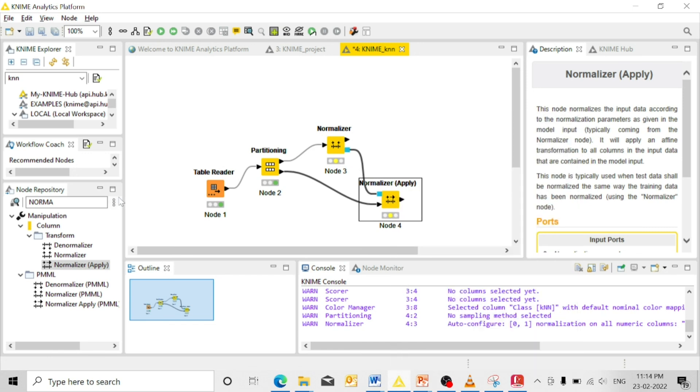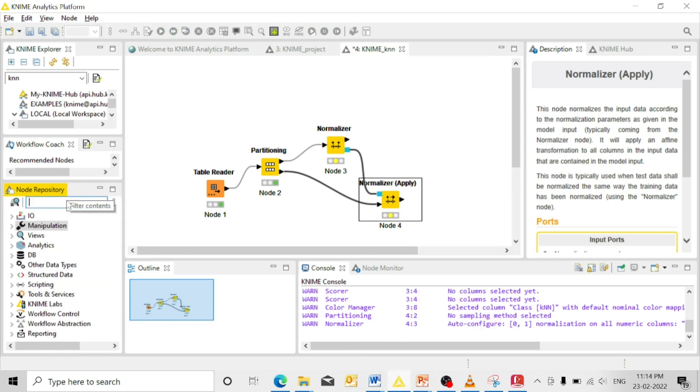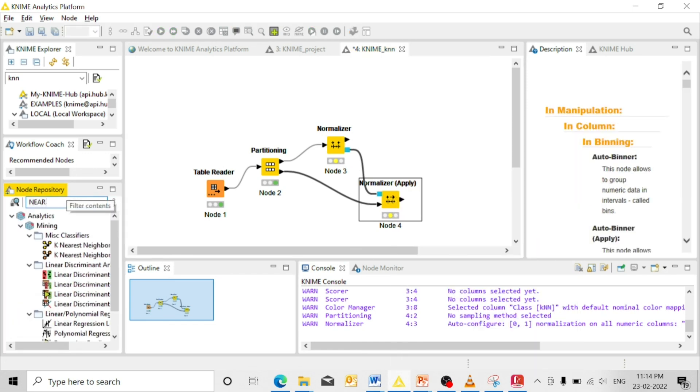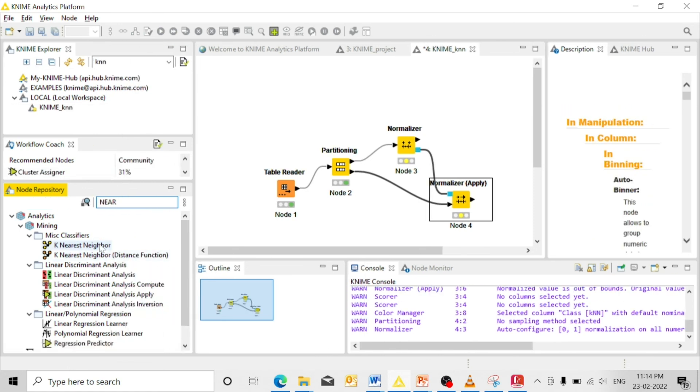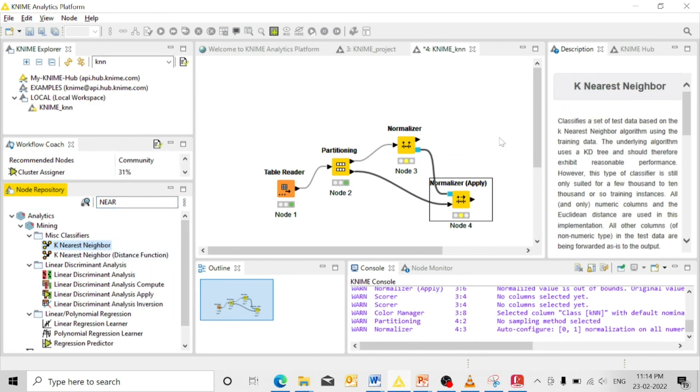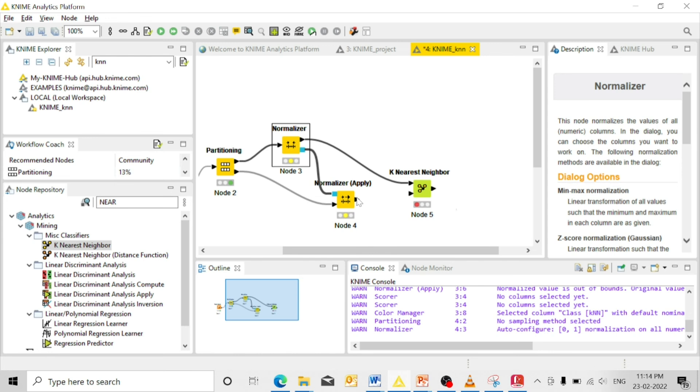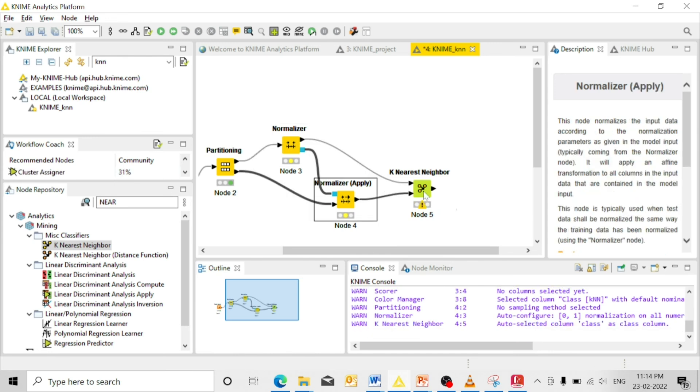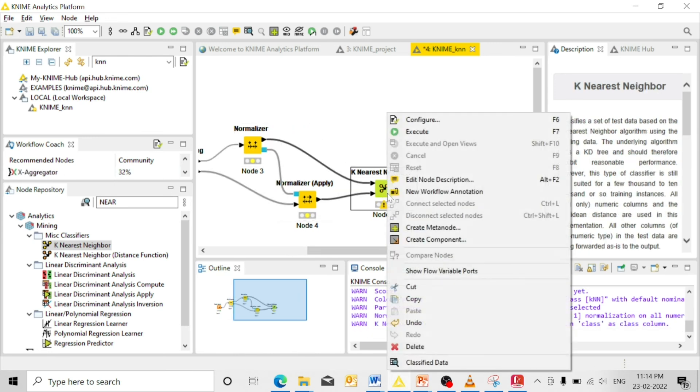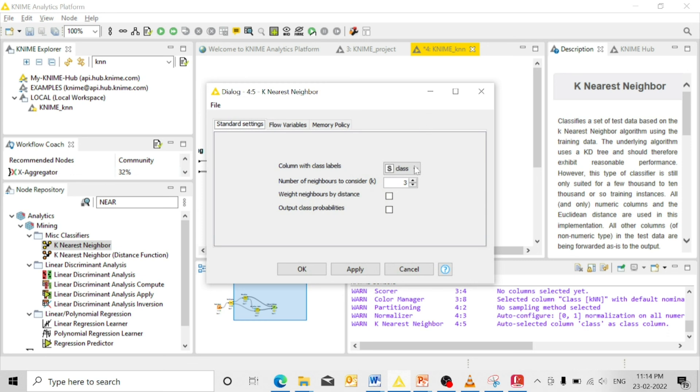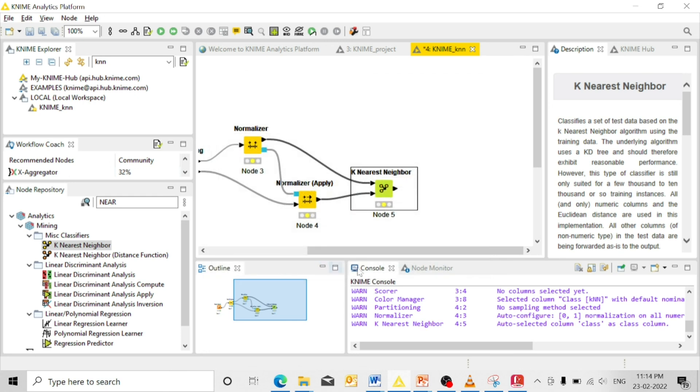Then similarly we search for nearest. So we have K-Nearest node. Just drag and paste, connect like this. Then right click, configure. Since we have three classes, we are going to have three class labels here. So give OK.